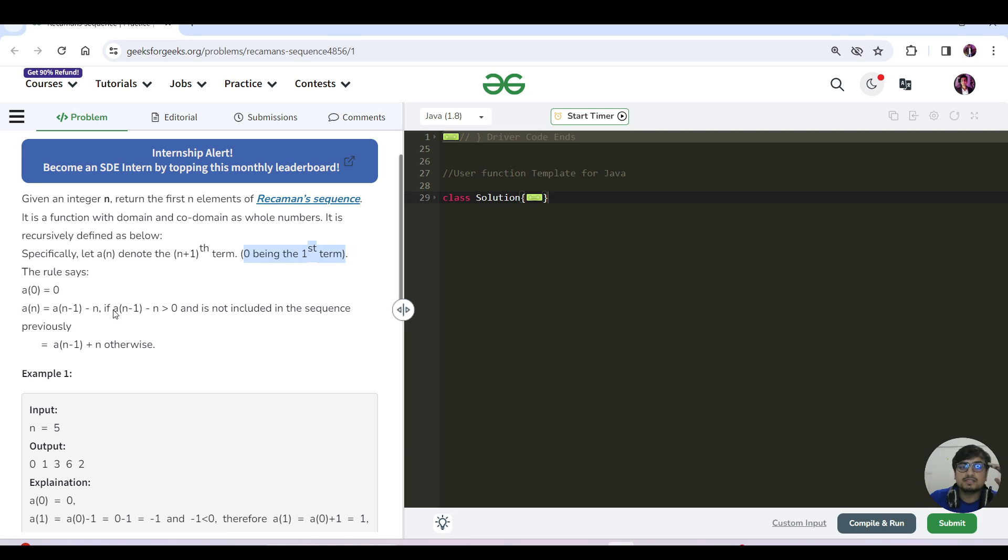It is a[n] = a[n-1] - n if the value is greater than zero and it is not included in the sequence previously. This means the value must be greater than zero and this value should never repeat.